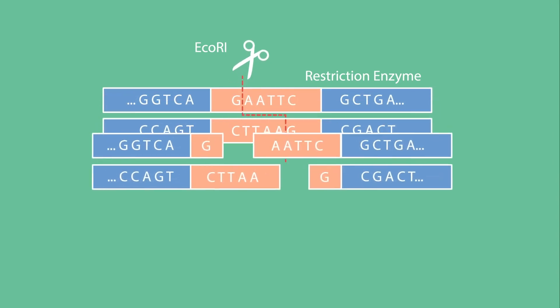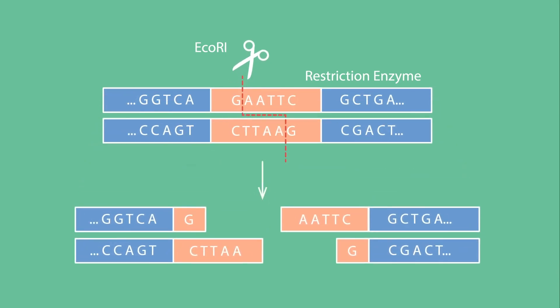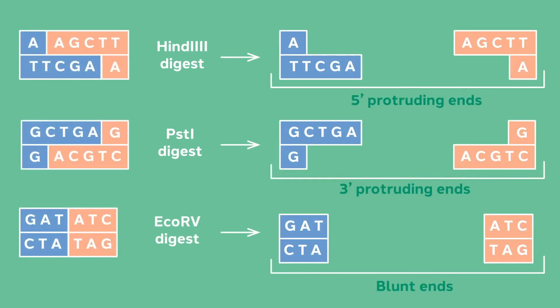In the example with EcoRI, you can see that the top strand reads from 5' to 3': G-A-A-T-T-C, with cleavage occurring between the G and the A. The exact same thing happens on the bottom strand when read from its 5' to 3' side. Cleavage by type IIP restriction enzymes always occurs between the 3' phosphate and the 5' hydroxyl of the sugar-phosphate backbone. Cleavage is sequence specific; however, different enzymes cut at different locations within the recognition sequence, resulting in three different types of ends.